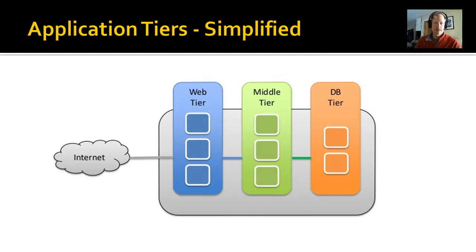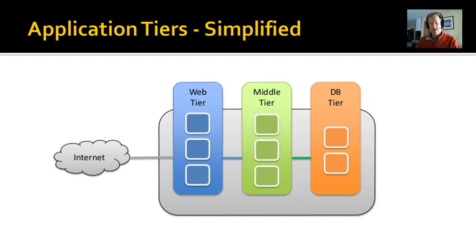We've talked about this concept of web tiers or application tiers, and it's an important concept here because we're going to be diving into some of these different tiers that make up ArcGIS Enterprise. We have a web tier, a middle tier, and a database tier. The internet comes in and connects to the web tier. The middle tier is usually software that's like plumbing connecting the database side and making it available for the web. We'll look at how ArcGIS Enterprise fits into all three of these tiers.